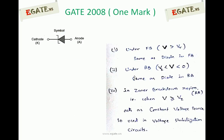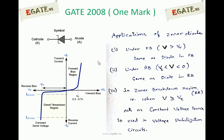Before seeing the details, we will first see how a Zener diode acts. This is the symbol for a Zener diode — this is the P side and this is the N side. This symbol looks like the letter Z, which implies Zener diode. These are the V-I characteristics of a Zener diode. Under forward bias, a Zener diode behaves similarly to an ordinary silicon diode, so it also has a cut-in voltage of 0.7V.